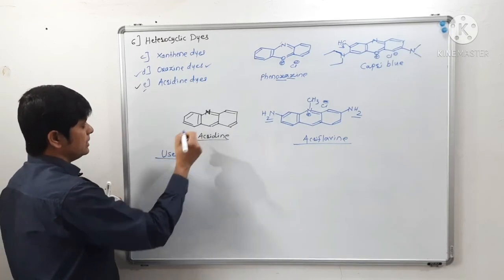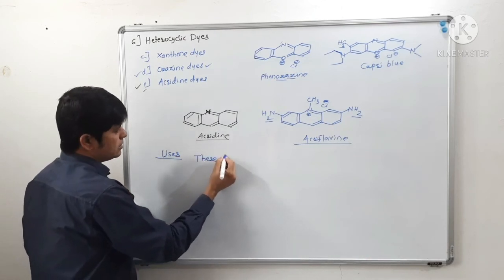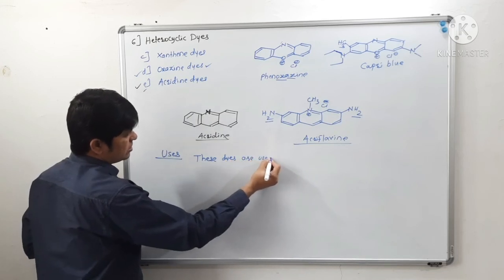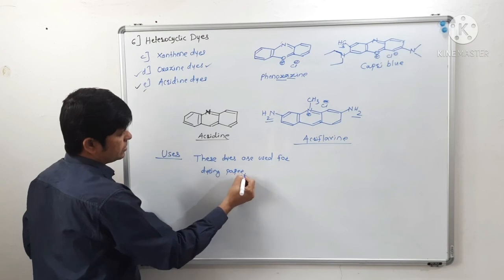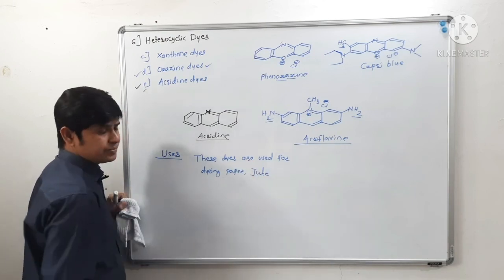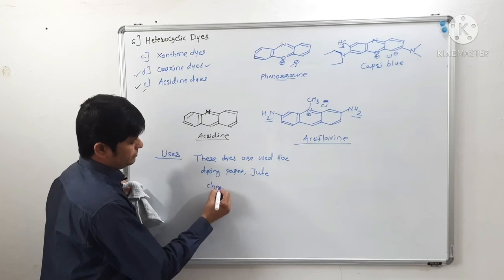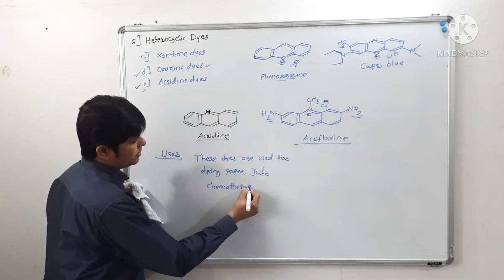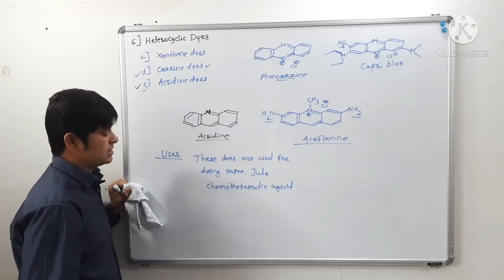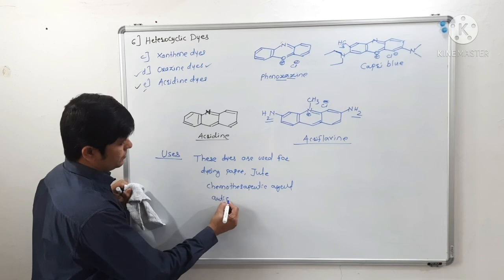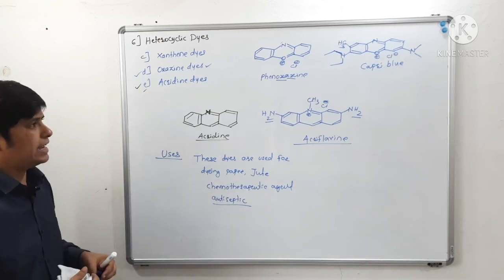The uses of acridine dyes include dyeing paper and jute fiber. One most important use is that acriflavine is used as a chemotherapeutic agent — it has application in drugs. It is also used as an antiseptic. These are the uses of acridine dyes, with acriflavine as the key example.